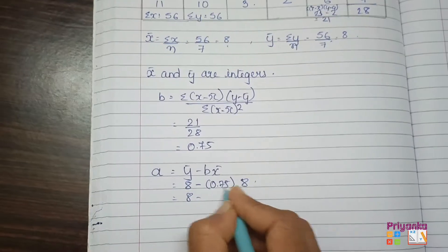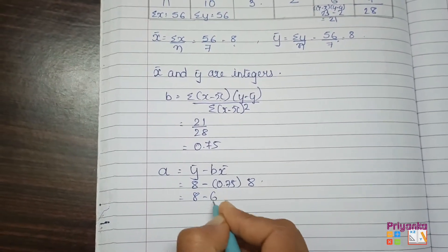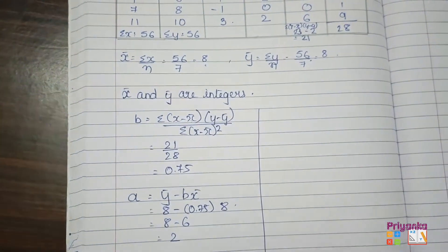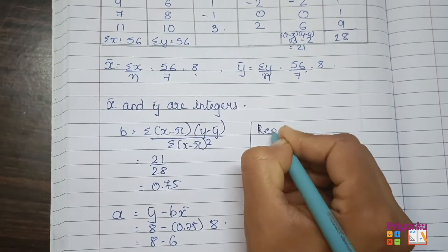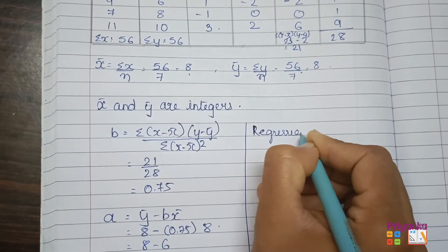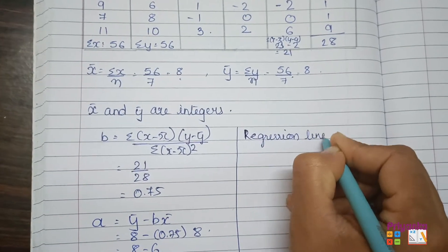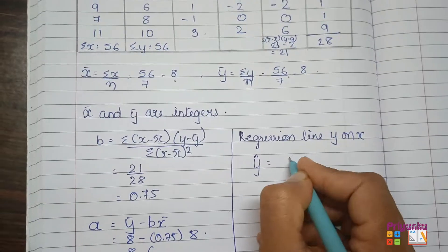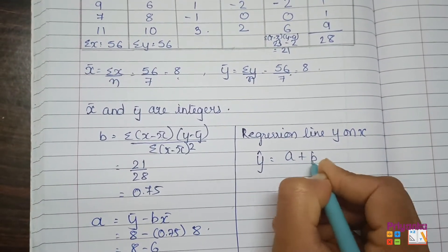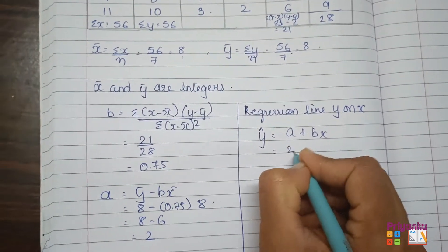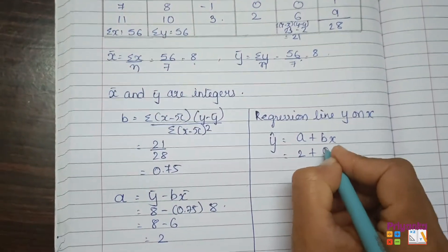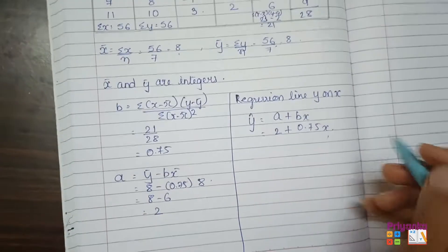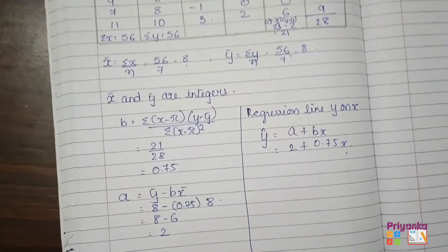Next, find a = ȳ − b·x̄ = 8 − 0.75 × 8 = 8 − 6 = 2. Now the regression line is: ŷ = a + bx = 2 + 0.75x. Since no specific value of x is given, that is the final regression equation.